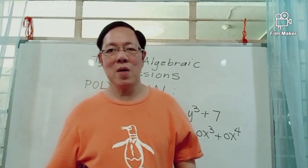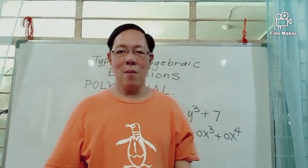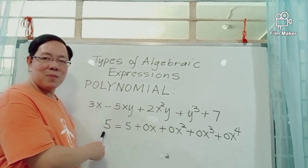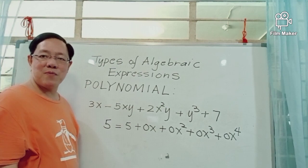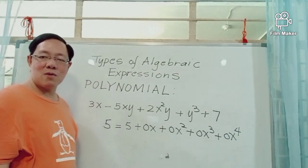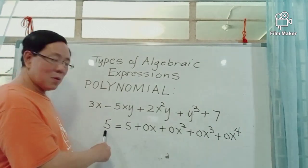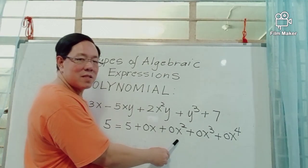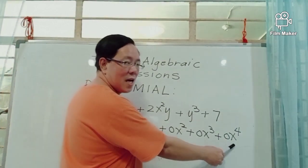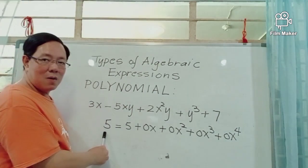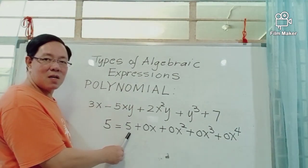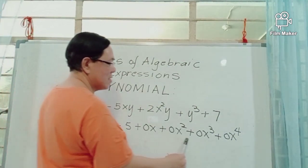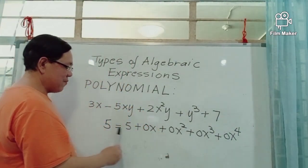Any constant or algebraic expression can be written as a polynomial. For example, the constant 5 is a monomial, but it can be written as a polynomial by adding terms with zero coefficients: 5 plus 0x plus 0x squared plus 0x cubed plus 0x to the fourth. If you simplify the right-hand side, it only simplifies back to the constant 5.